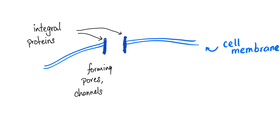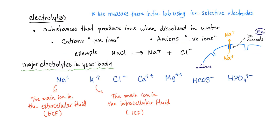Now let's turn our attention to electrolytes. If you are a sports person, you have heard of water with electrolytes that you pick up off the shelf to drink and rehydrate and replete yourself after running a marathon. So what are electrolytes? They are substances that produce ions when dissolved in water. We will have positive ions called cations and negative ions called anions. For example, sodium chloride gives us a positive ion of sodium and a negative ion of chloride. Major electrolytes in your body are sodium, potassium, chloride, calcium, magnesium, bicarbonate, and phosphate. Sodium is the main ion in the extracellular fluid; potassium is the main ion in the intracellular fluid.